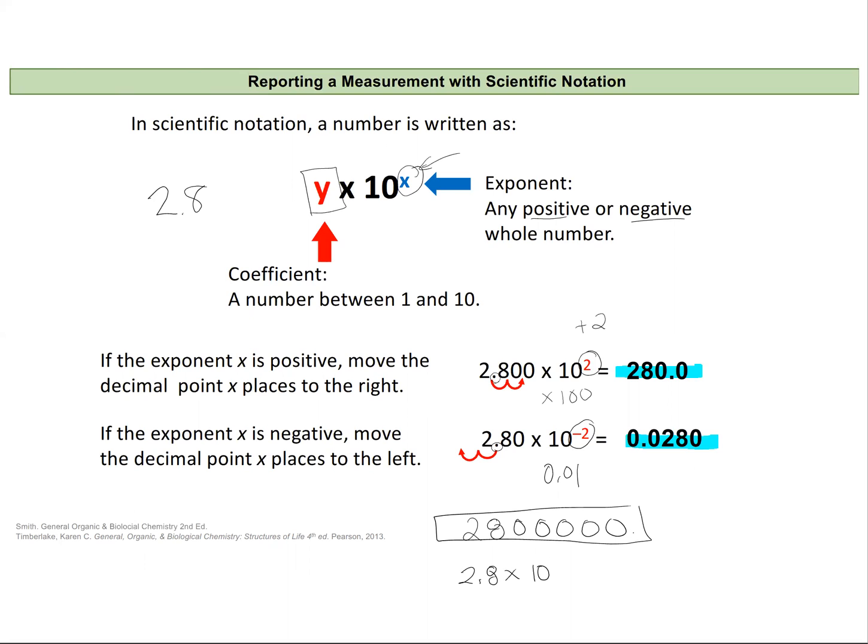In which case I would figure that out by going, well, how many decimal places do I need to move to have 2.8 be my coefficient value? And it'd be 1, 2, 3, 4, 5, 6. So I'd multiply 2.8 times 10 to the 6.